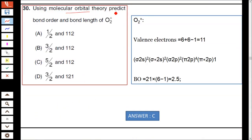Question 30: Using molecular orbital theory, predict the bond order and bond length of O₂⁺. O₂⁺ has valence electrons: 12 - 1 = 11 (for oxygen it is 6 + 6 = 12, minus 1 gives 11). For 11 electrons: σ1s², σ*1s². If you arrange the electrons like this, you will get the bond order as 2.5. The bond order is 2.5. Hence option C is correct, and the bond length is 112 pm.